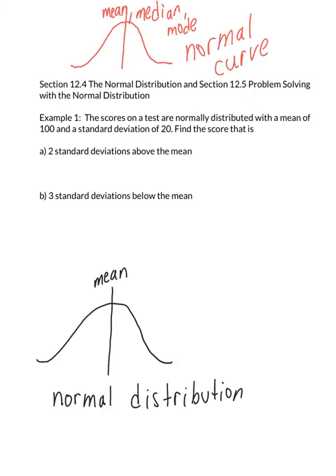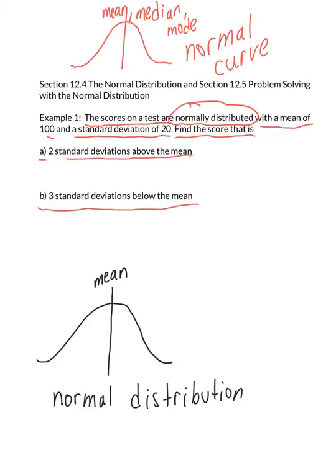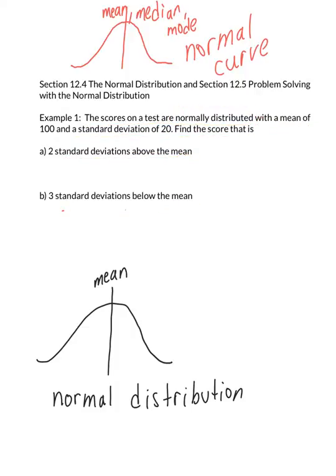Let's look at example one. The scores on a test are normally distributed — whenever it says that in your word problem, that means you can use the special properties of the normal curve. With the mean of 100 and a standard deviation of 20, find the score that is A, two standard deviations above the mean, and B, three standard deviations below the mean. There are two ways to get the correct answer: use a formula, or visualize it using a graph.